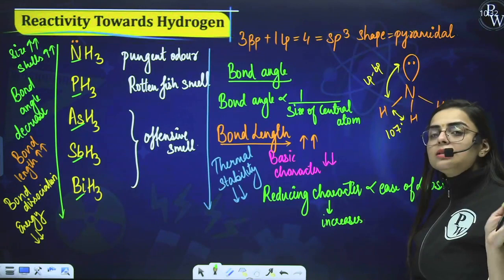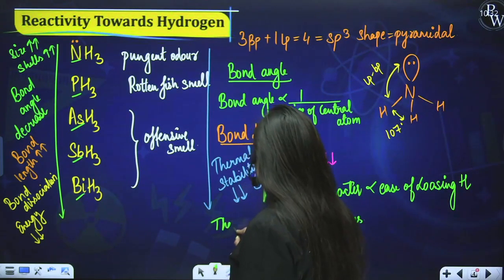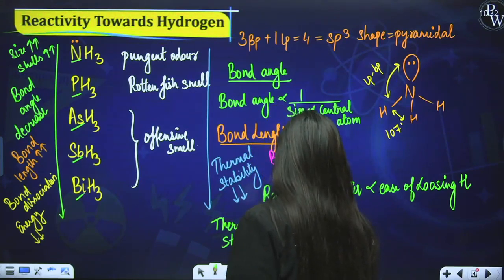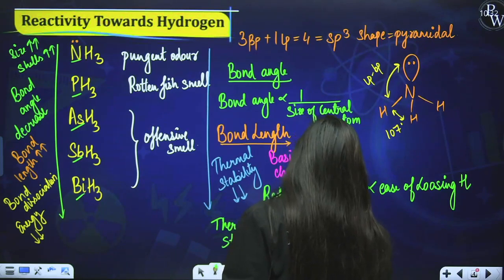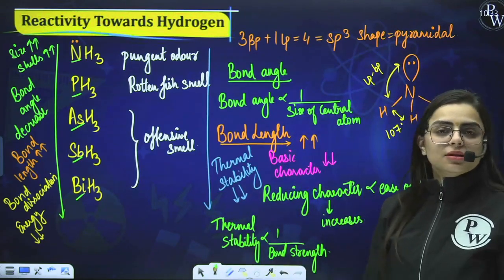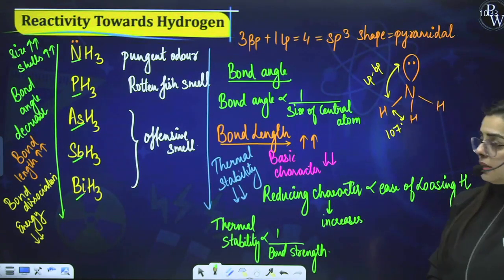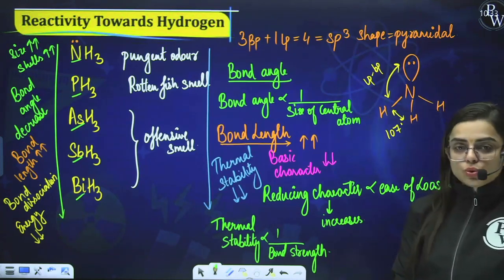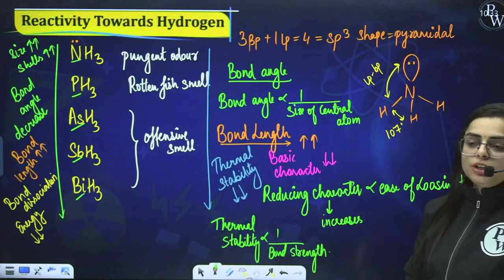One more important point: thermal stability is inversely proportional to bond strength. So if they ask about bond strength, you can determine its order accordingly.